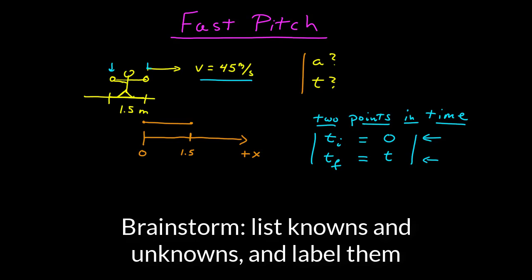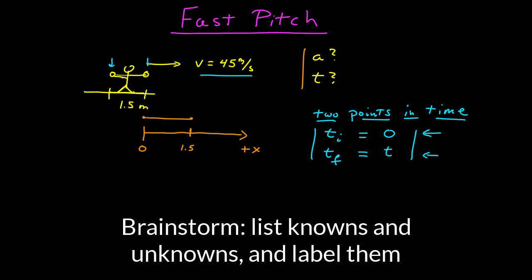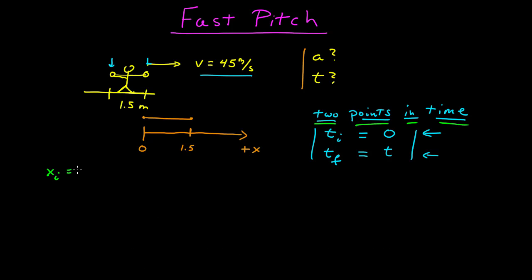Usually in kinematics problems, at this point in my brainstorming session, I like to put down a list of everything I know and everything I don't know. My initial position is as I've defined it, given my coordinate system, 0. My final position is known. That's given in the problem. That's 1.5 meters.